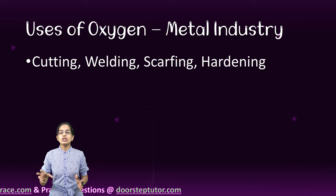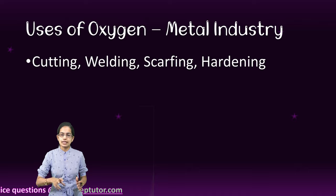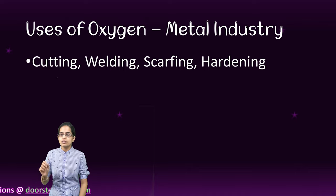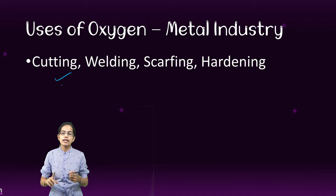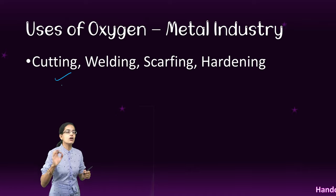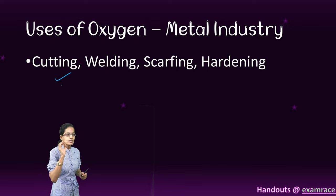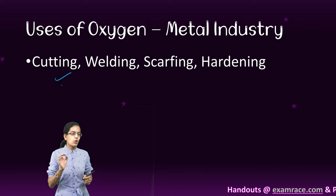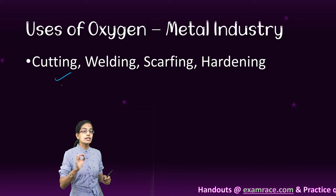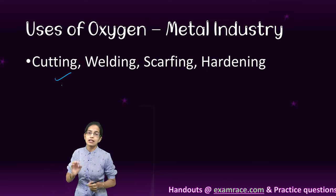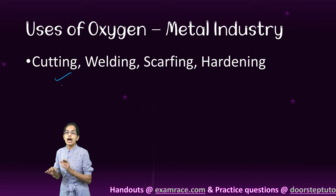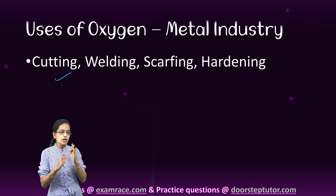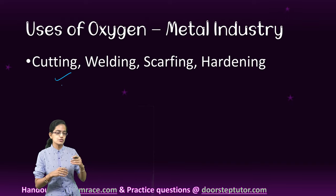This oxygen used in the metal industry is mainly used for the purpose of welding, cutting, or hardening. It is also associated with chemical refinery processes where carbon removal is one of the major concerns.